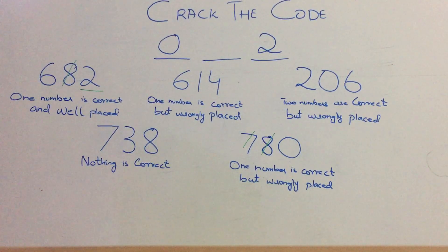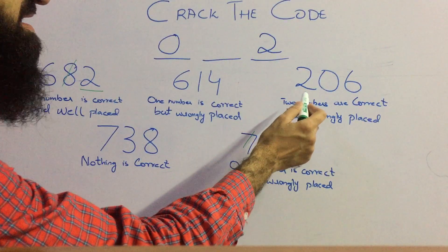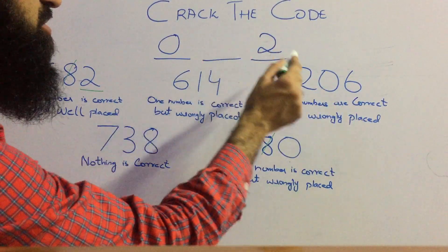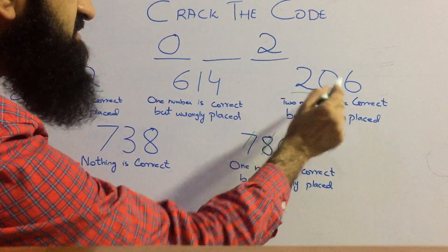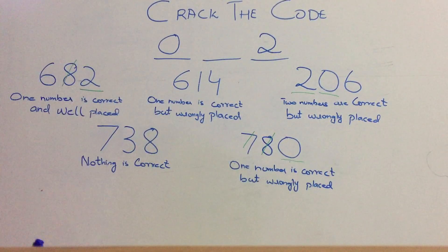Now we are left with the second place number. We have satisfied this hint - two numbers are correct. So 0 and 2 both are correct. We have already satisfied this hint. Now we are left with this hint, and that hint is one number is correct but wrongly placed.